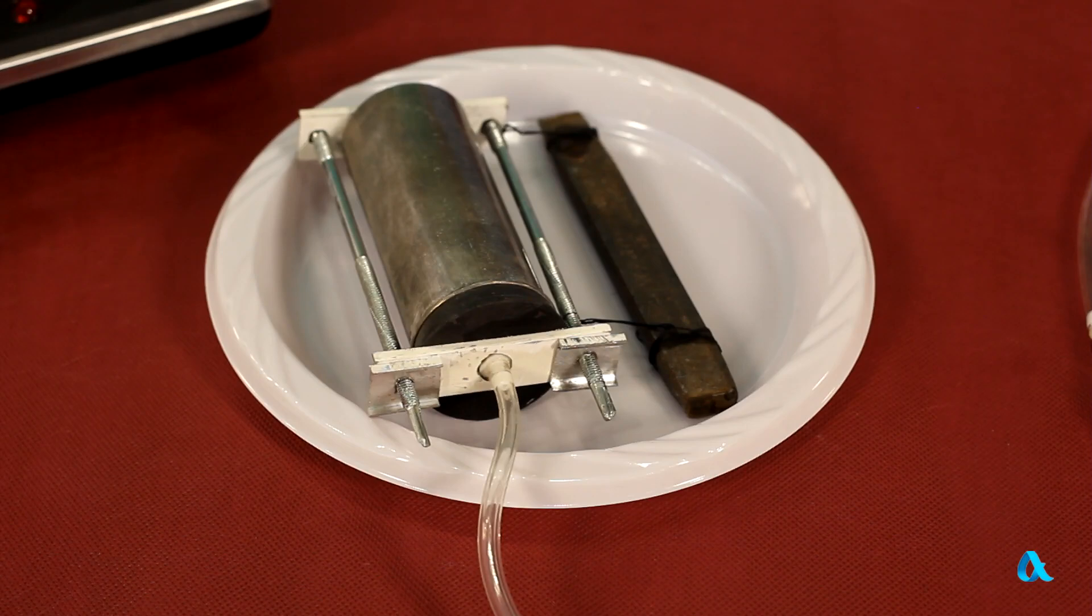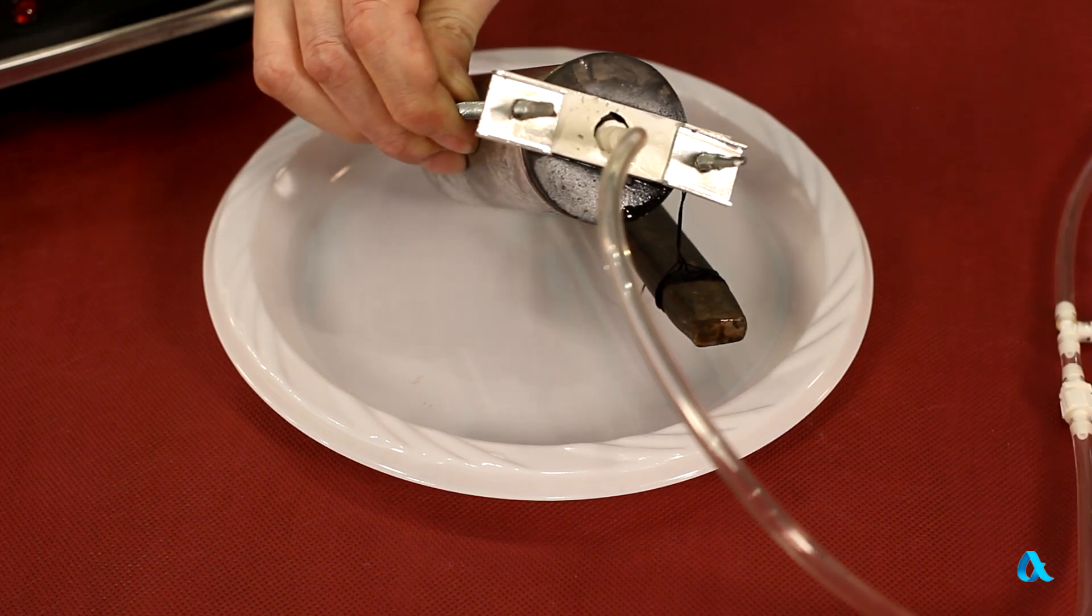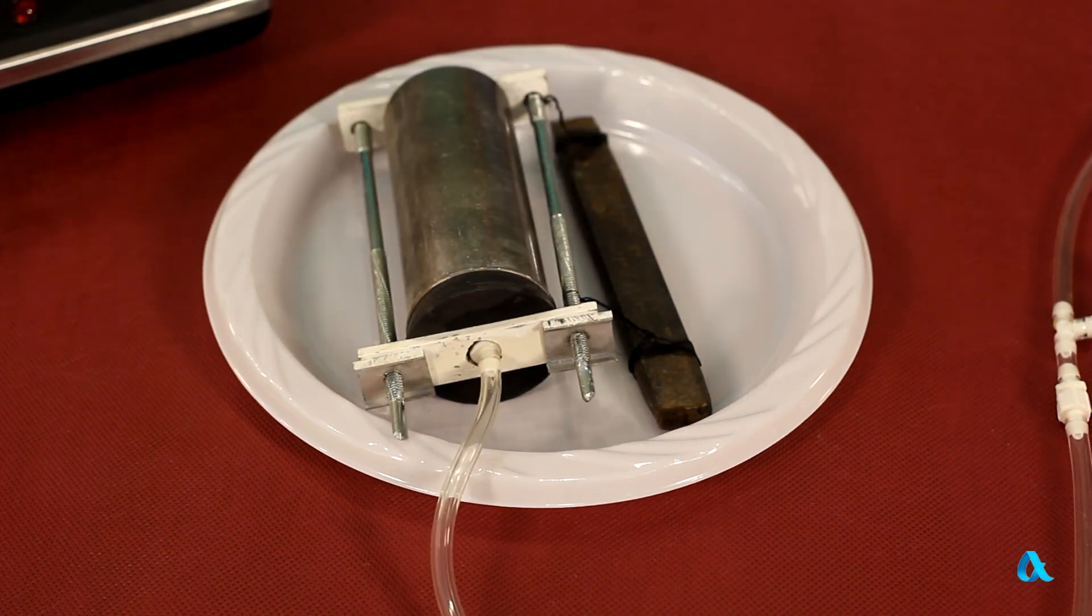We will now reproduce Charles' law, which shows the dependence of pressure on temperature. We stopper a metallic vessel securely with a rubber plug so that gas volume within it would not change. We insert a pressure gauge into the stopper.